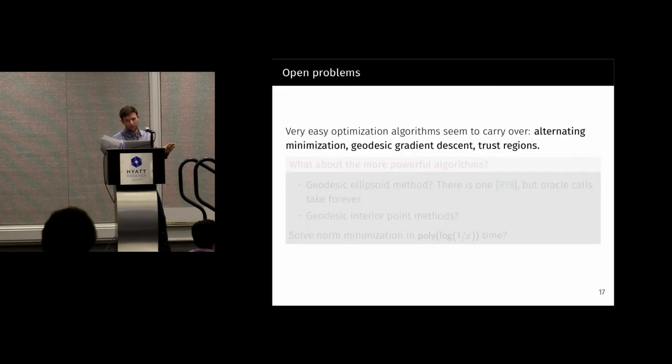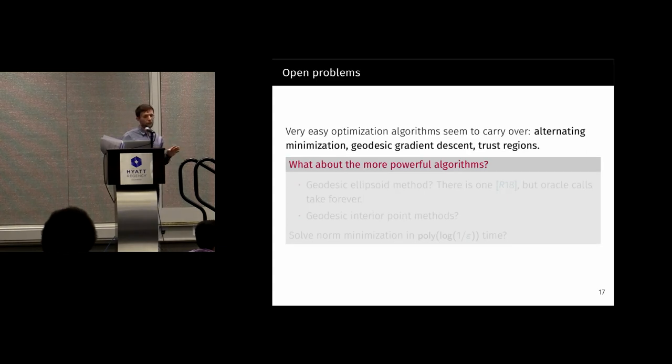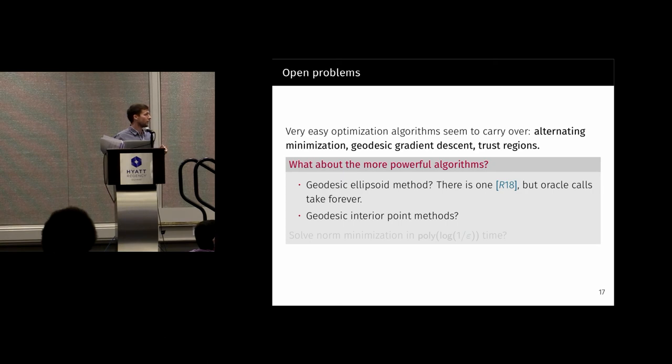Finally, really quickly, I'm going to just mention the open questions. So far we've done really easy optimization algorithms. We want to know whether there's analogs of the more powerful optimization algorithms, like a geodesic ellipsoid method. Well, actually there is one, but apparently the oracle calls take exponential time. And maybe there's some version of interior point or something like that. We don't know. And hopefully these will solve the norm minimization problem in poly log 1 over epsilon time. That's it. Thanks.